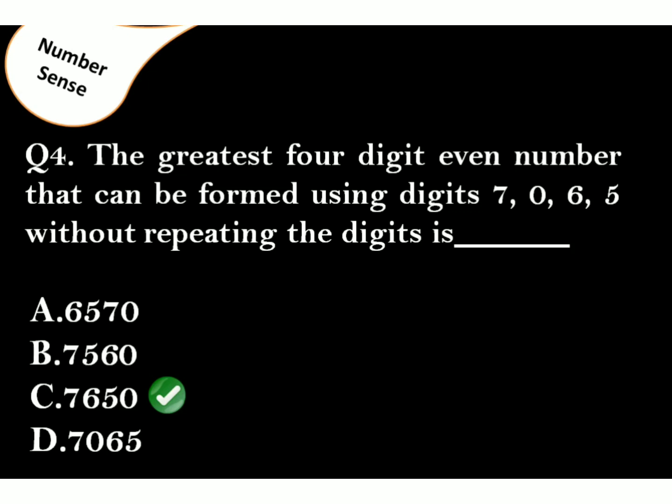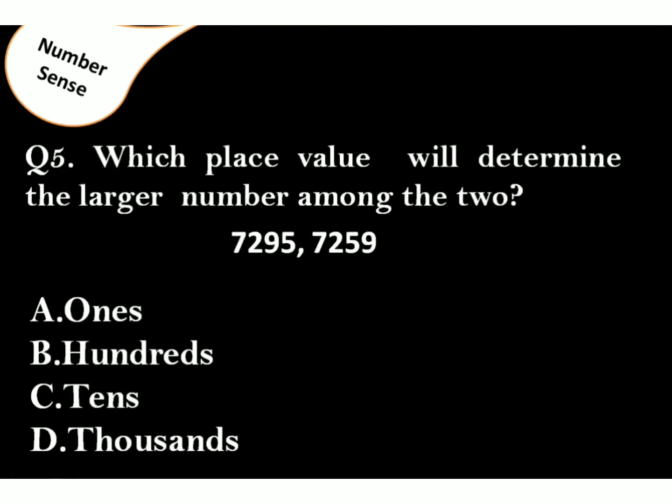Question 5. Which place value will determine the larger number among the two? Correct answer is Option C. Numbers at 1000 and 100's place are same. So, we will compare the numbers of 10's place. First number has 9 at 10's place and second number has 5 at 10's place. So, the first number is the largest.